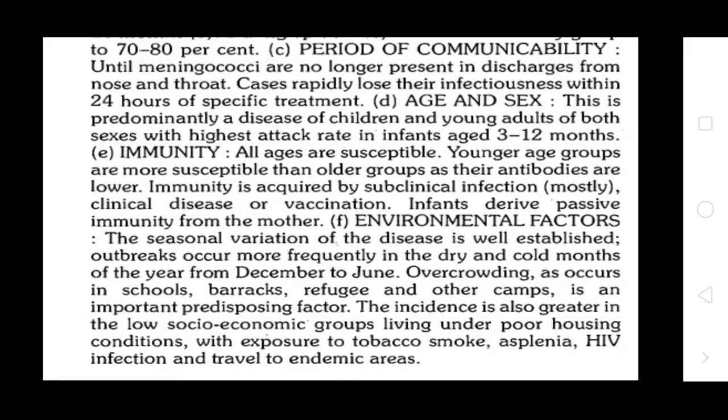Environmental factors include seasonal variation — outbreaks occur more frequently in dry and cold months, from December to June. Overcrowding in schools, refugee camps, and other camps is an important predisposing factor. Incidence is greater in lower socioeconomic groups living under poor housing conditions, with exposure to tobacco smoke, asplenia, HIV infection, and travel to endemic areas.